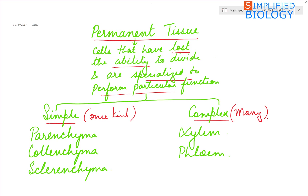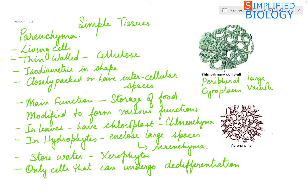Simple Tissues are Parenchyma, Collenchyma, and Sclerenchyma, while Complex Tissues are Xylem and Phloem. We will start with the Simple Tissues, first the Parenchyma.